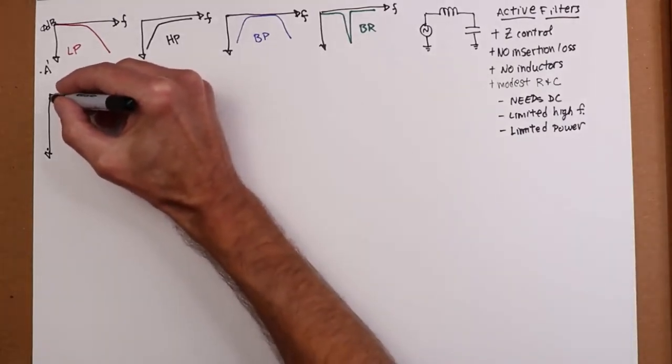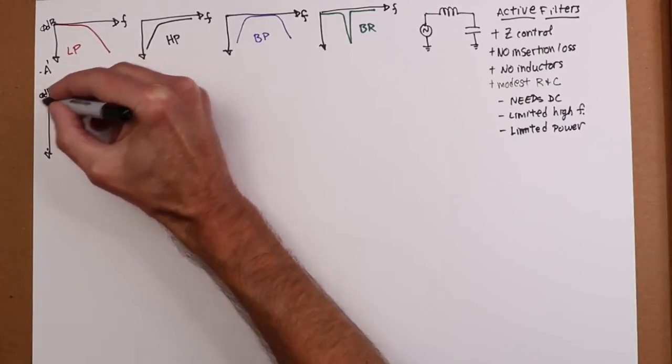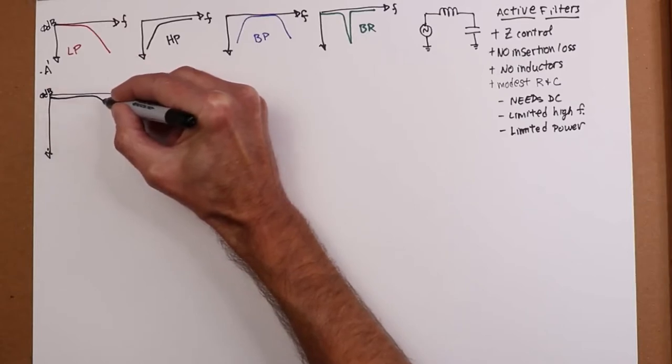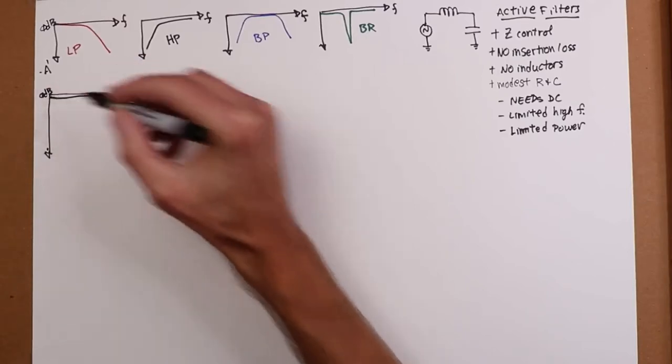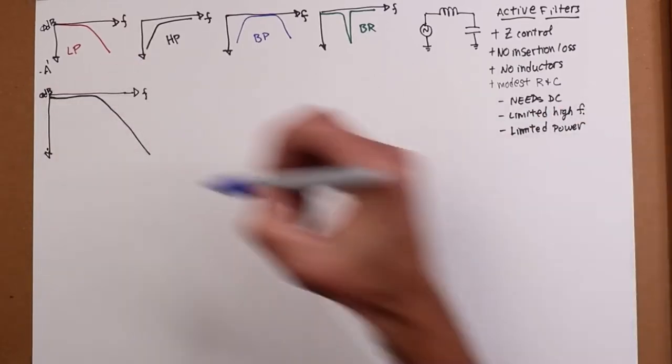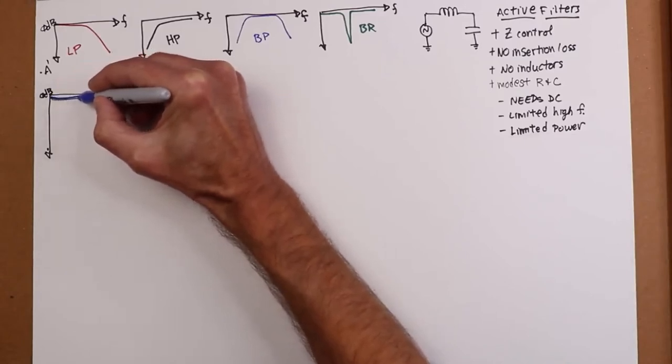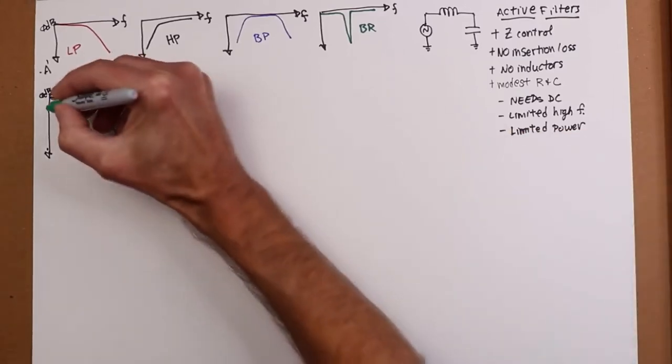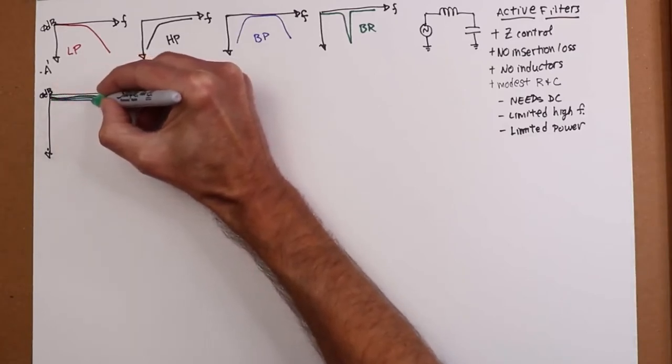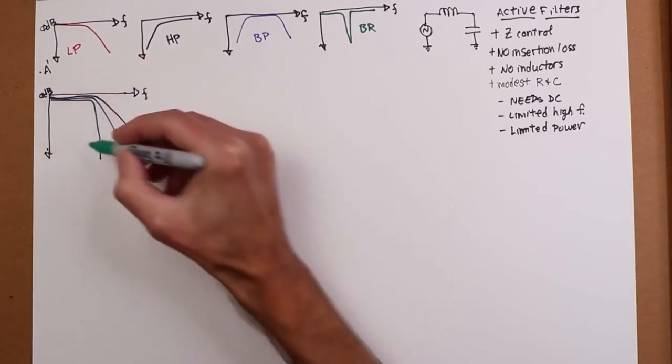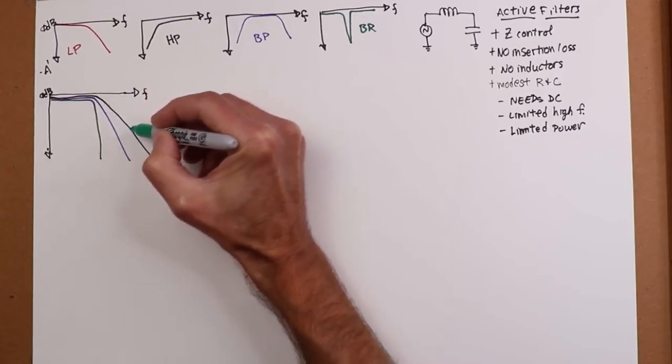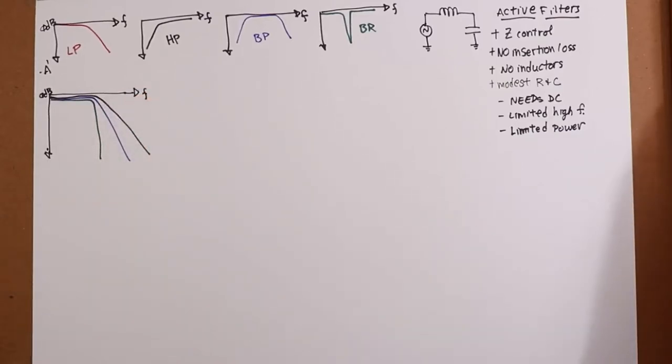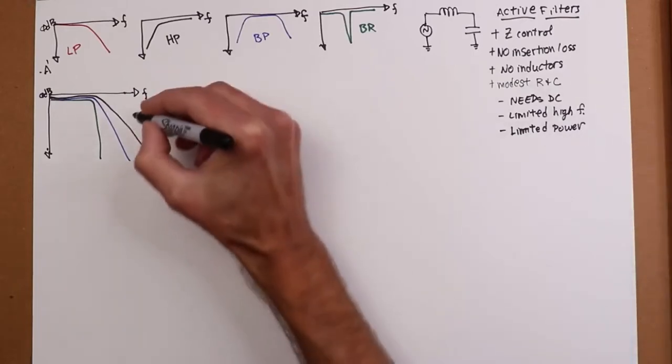One thing I want to know is just how steep that transition range is. So I'm going to put my zero db, my pass band here section a little bit lower so you can see it. Does it go like this? Does it go like that? Does it go like that? A very steep slope, modest slope, very shallow slope.